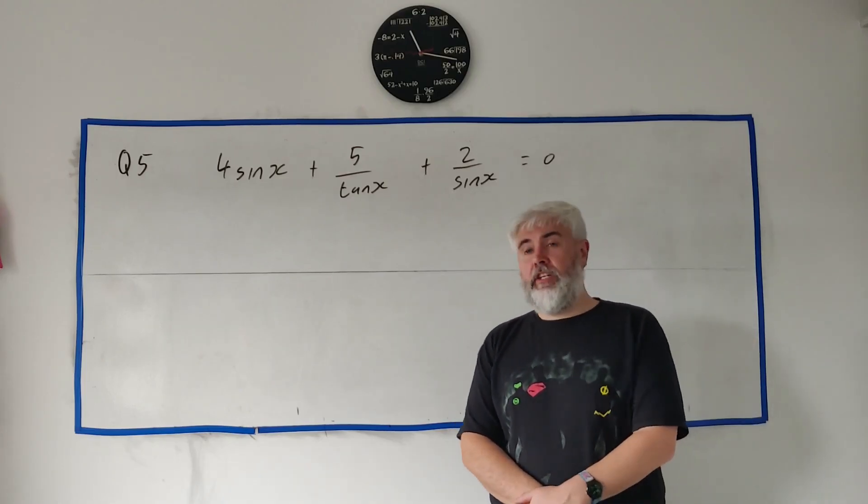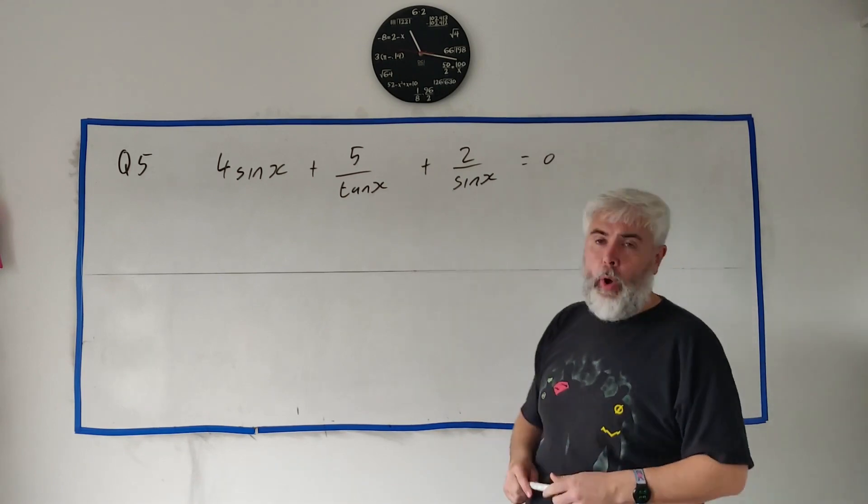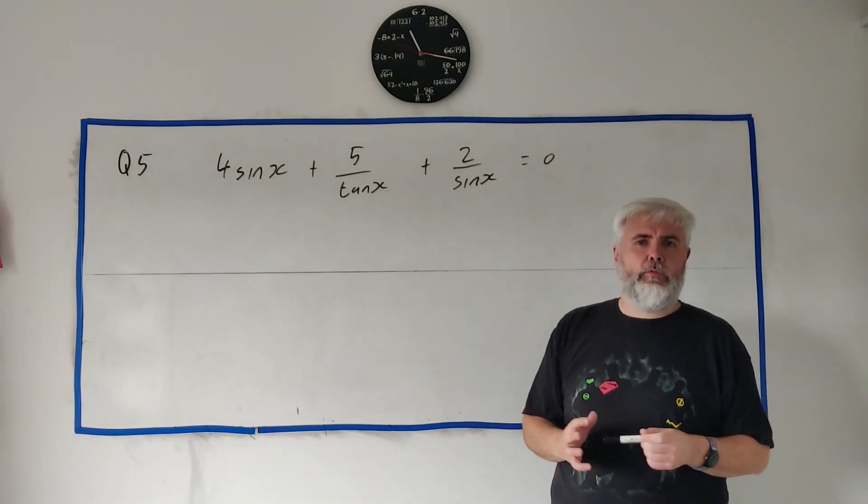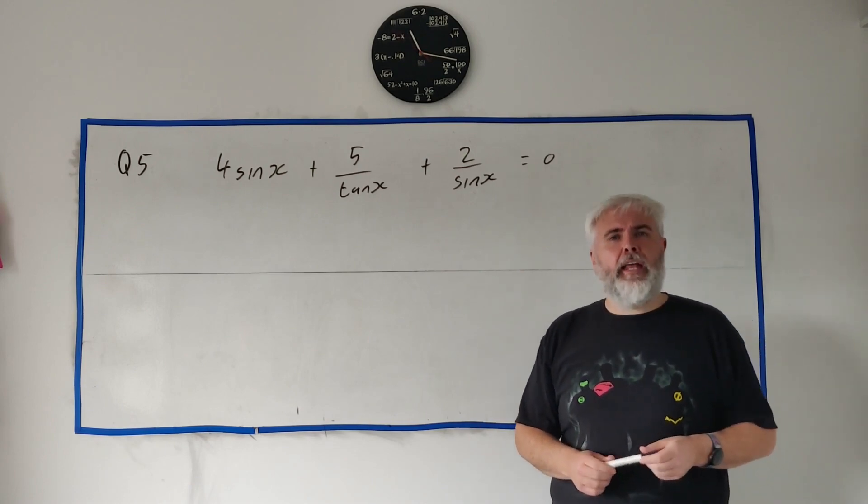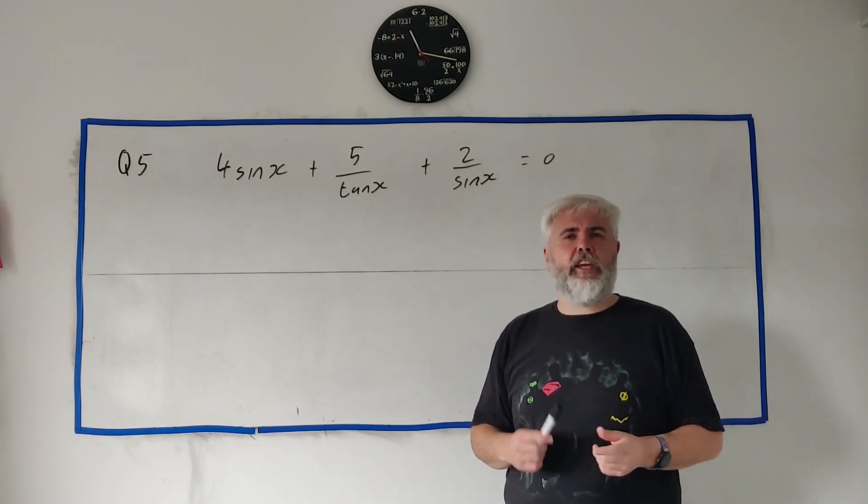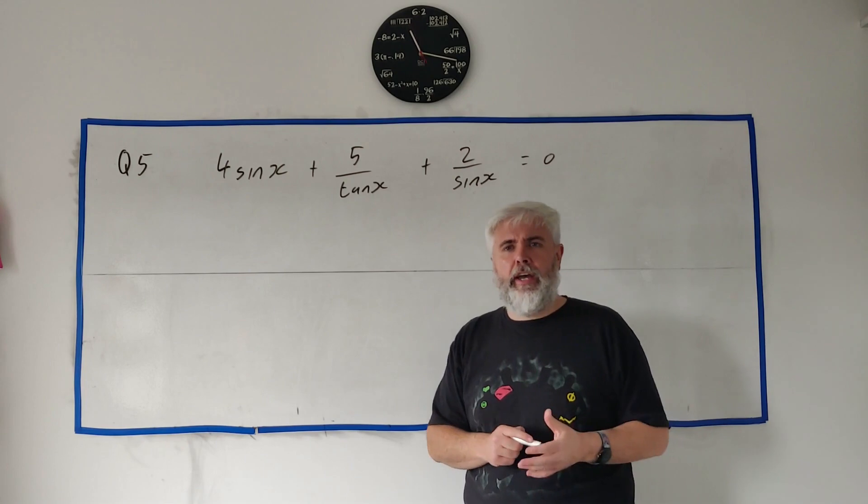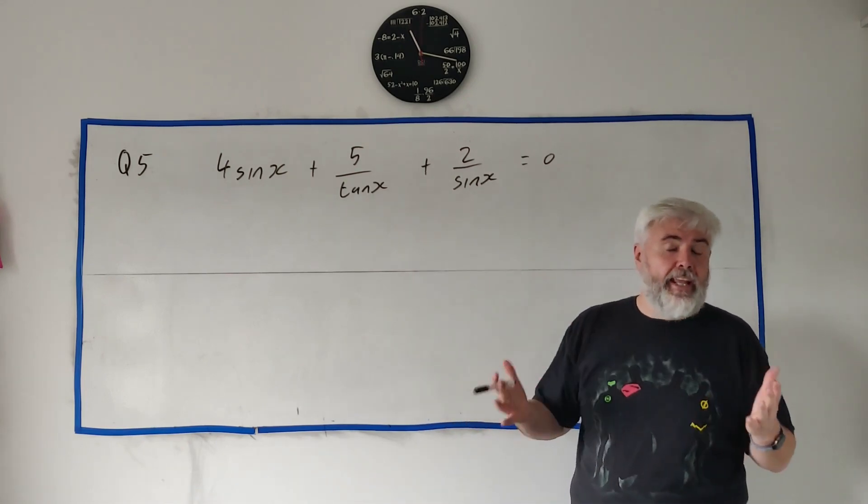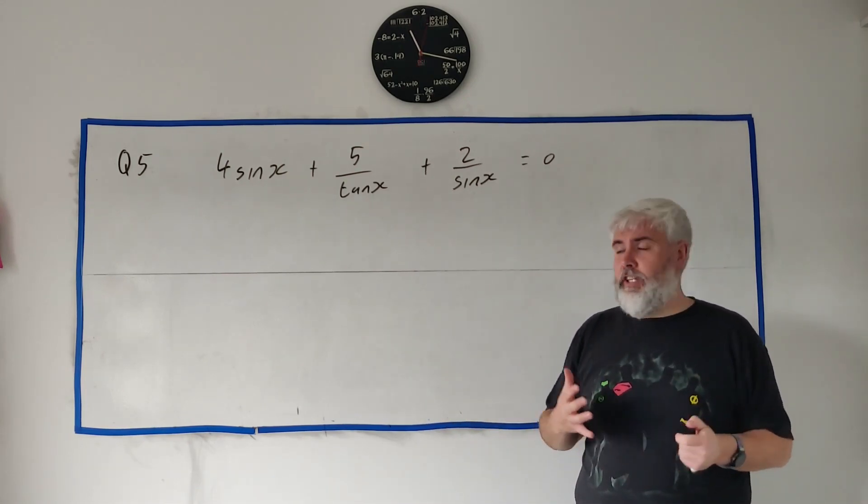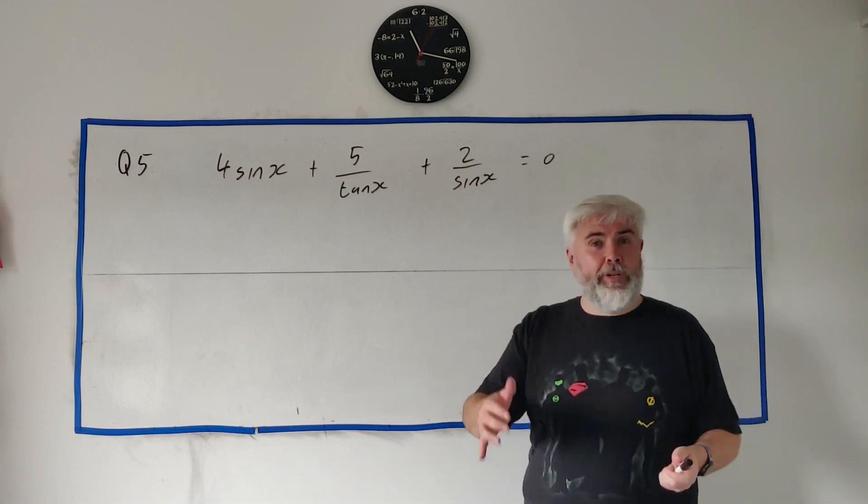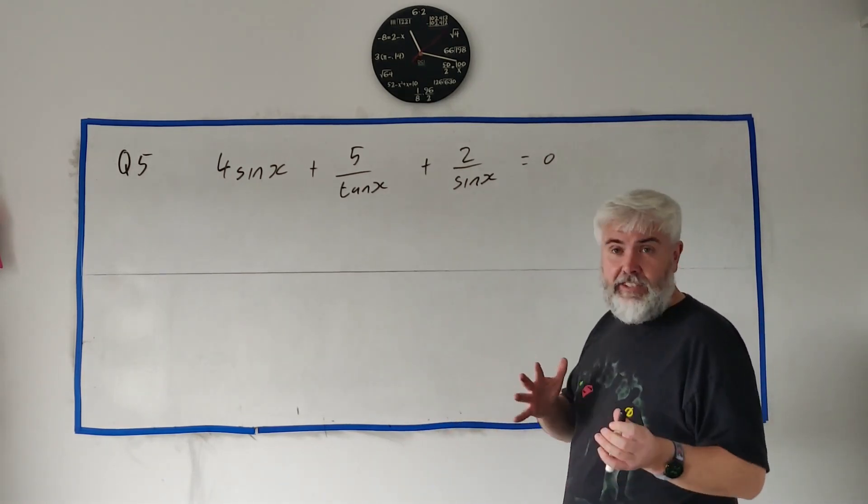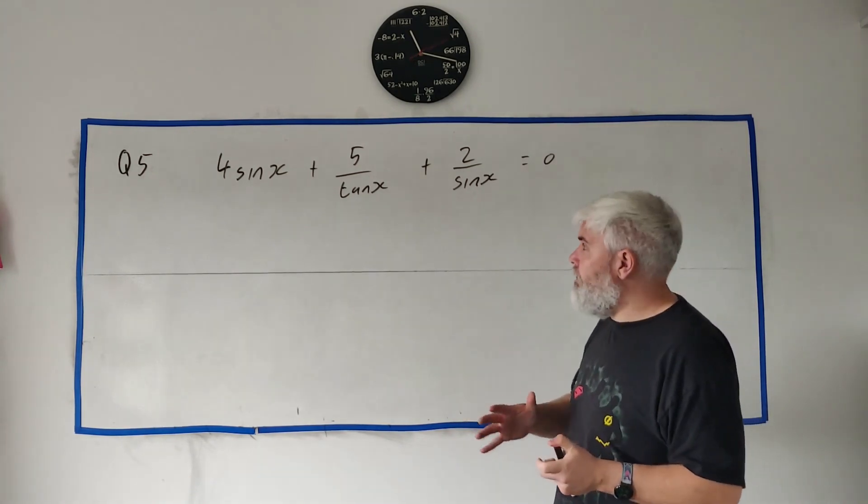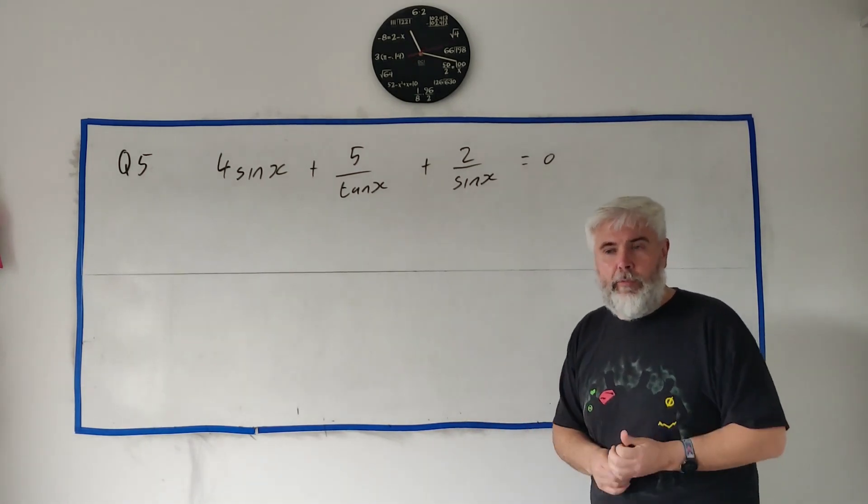In question five we're given this trigonometric equation and we're asked to express it in a different form. Basically rearrange it. The form they want has a cosine squared, a cosine and just an integer. So basically they want to turn it into a quadratic and presumably then in part b we'll solve that. They want everything to be in the form of cosines.